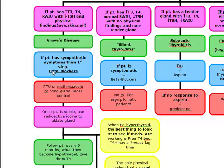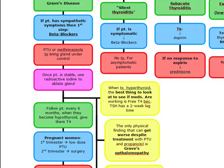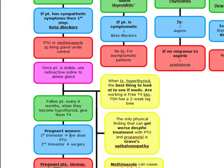So our first step in the symptomatic patient was beta blockers, then PTU or methimazole, then radioactive iodine once the patient was stable, and then we follow this patient every six months. When they become hypothyroid, we give them T4. The best way to see if these medications are working is to measure the free T4, because TSH actually has a two-week lag time.